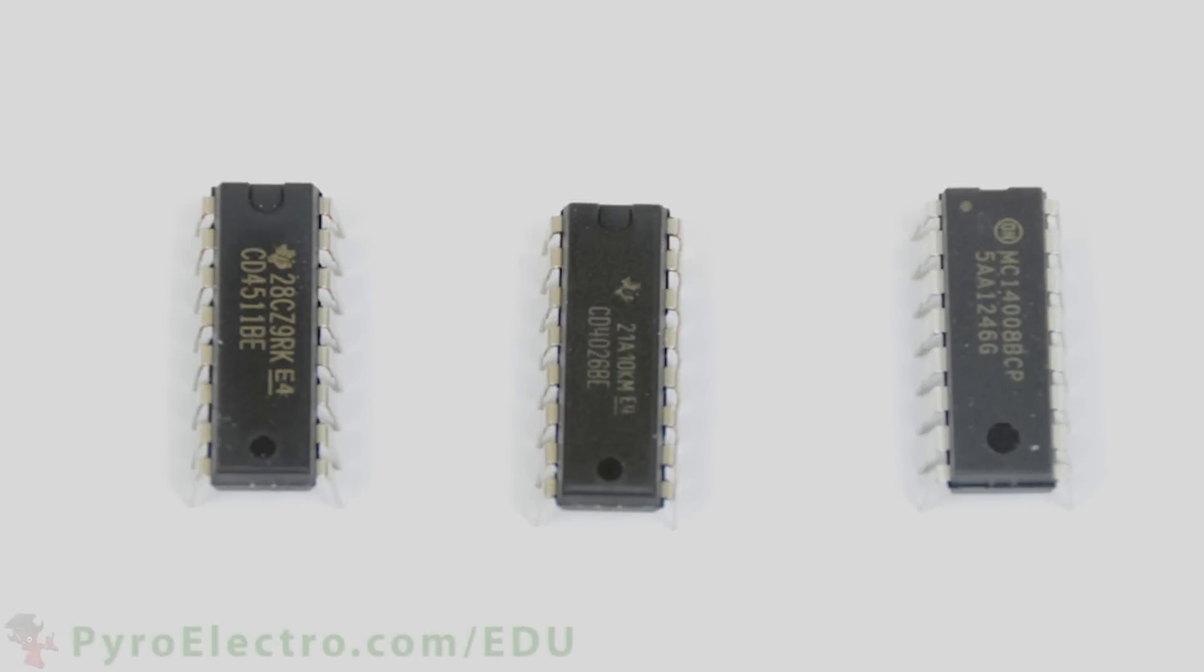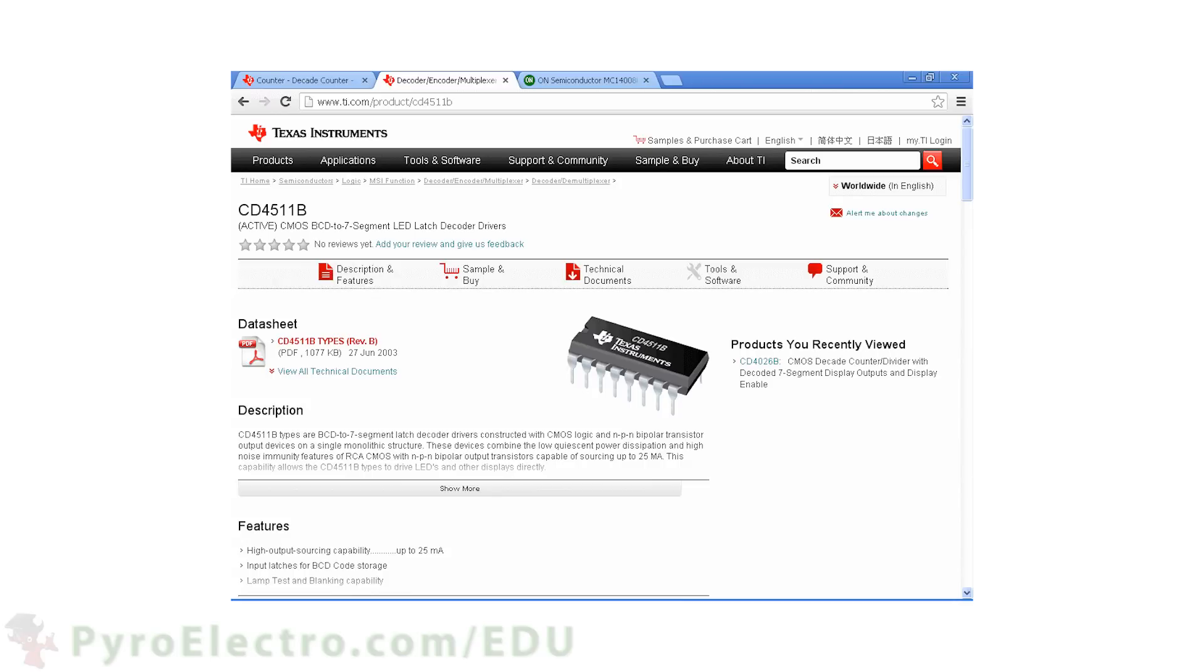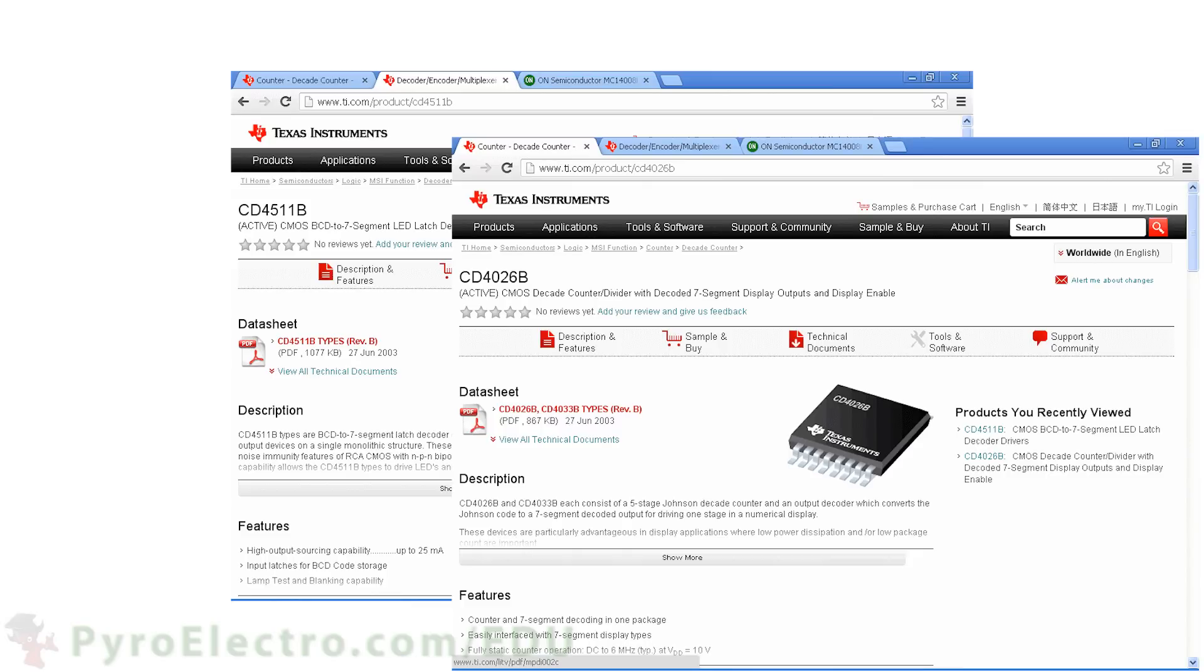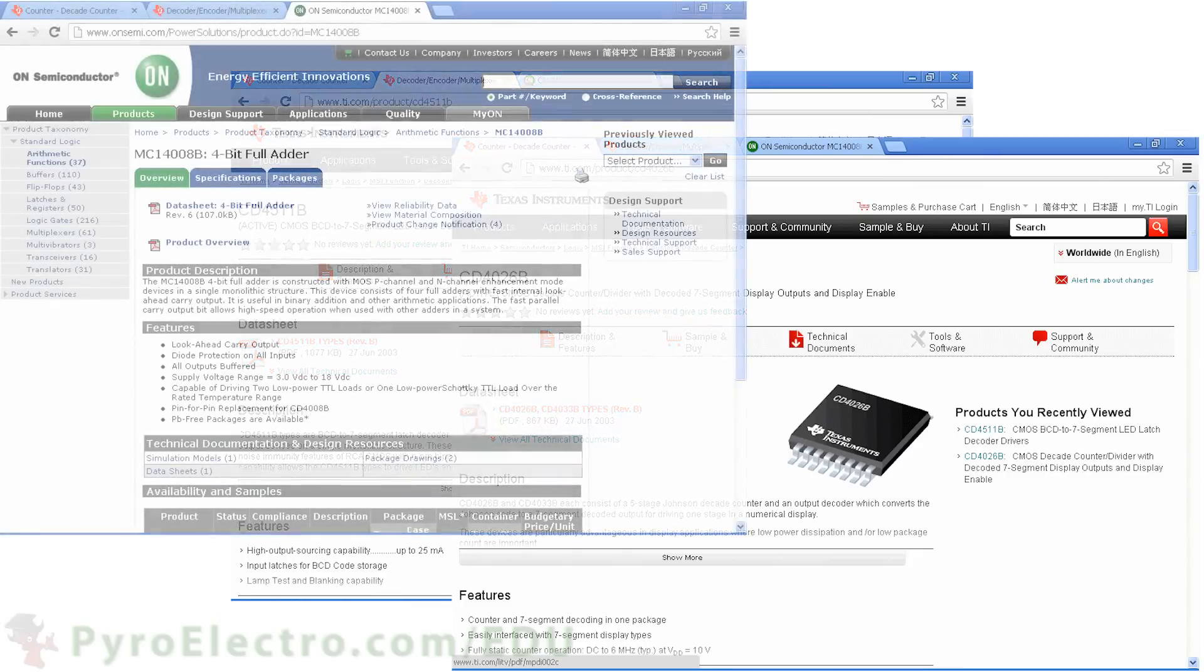The three specific 4000 series logic devices that we'll be taking a look at today are the 4511, which is a 7 segment LED display driver, a 4026, which is a 4 bit counter plus 7 segment LED display driver, and a 4008, which is a 4 bit adder IC. That's right, a calculator in a digital logic IC.